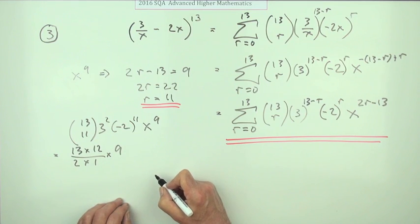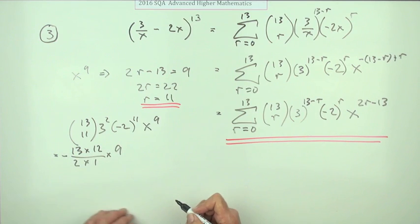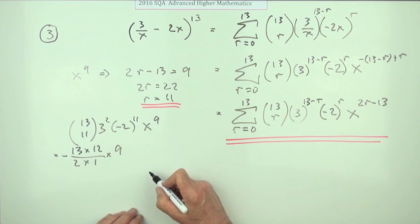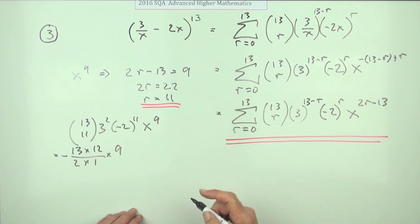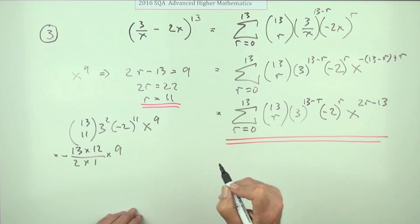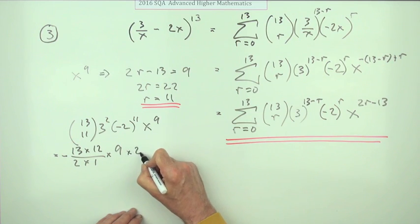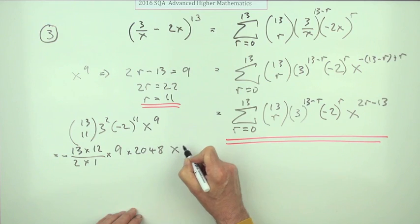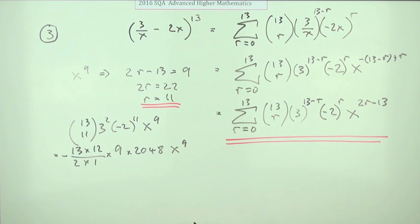An odd power, so it's definitely negative. 2 to the power 11. We always remember 2 to the power 10 because it's like the 1000, it's 1024. So that's 2048. X to the 9. I'm just going to give in now and use my calculator to work that lot out.